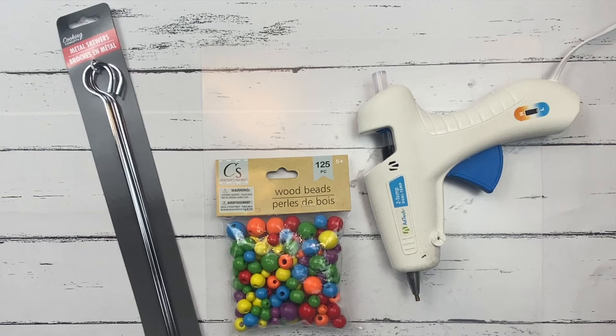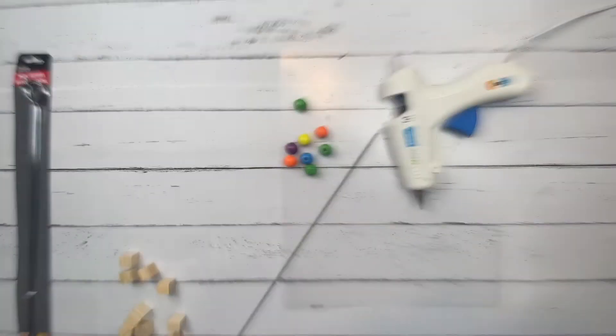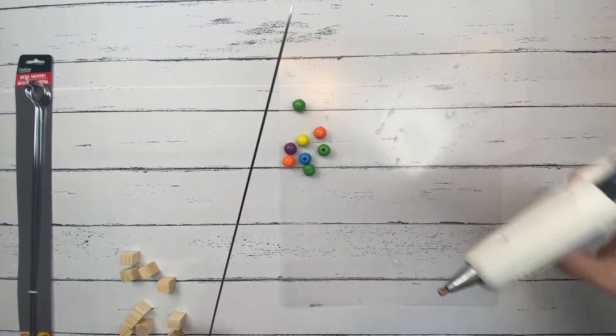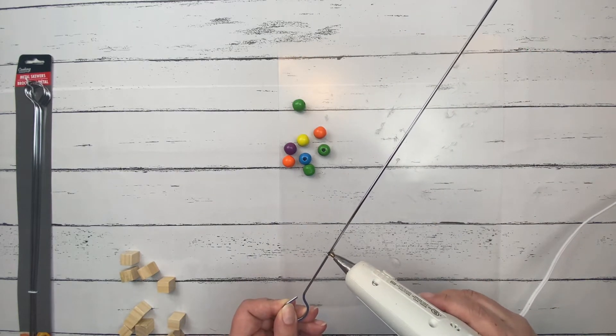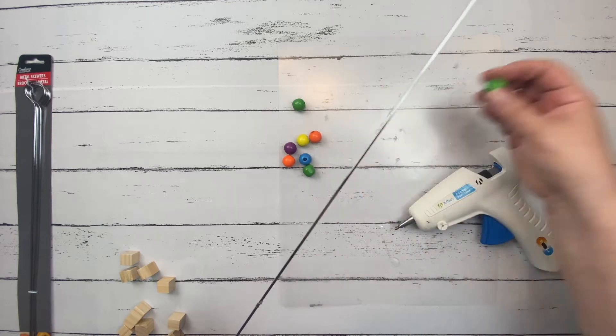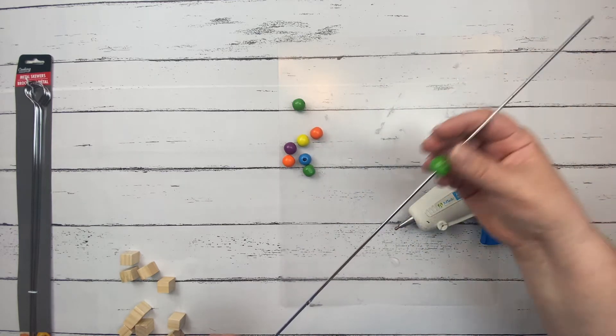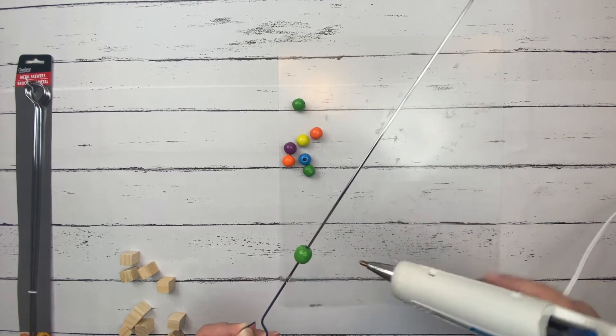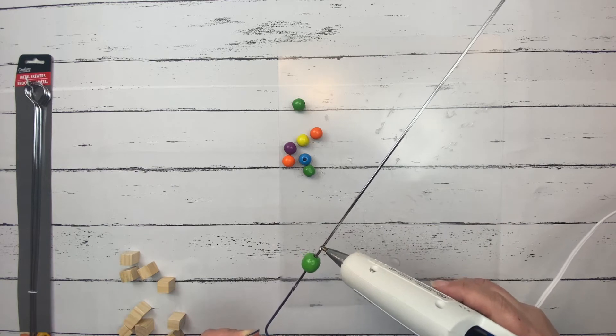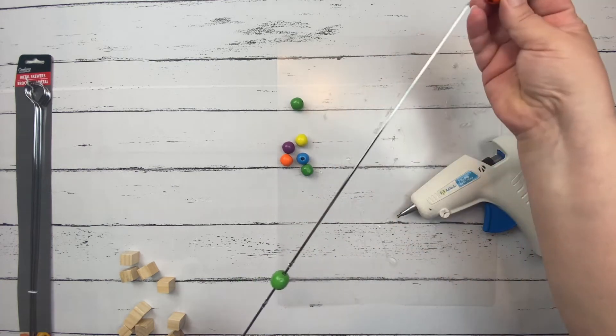Just need some metal skewers and a hot glue gun. To begin you want to put a little bit of hot glue right there and then put a bead on. And then place some more hot glue on the other side of that bead. Leave room in between.